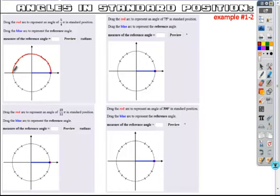Pi over 4 was what fraction? 45, so it's going to go all the way to here. So you're going to place your point right here. So this right here would represent your 5 pi over 4.